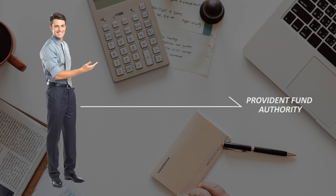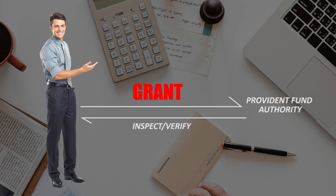Once documents are submitted online, the provident fund authorities will carry out an inspection. They will verify the documents, and if they are satisfied, they will grant the provident fund allotment number. As for what documents need to be submitted, we will see that in the next session.